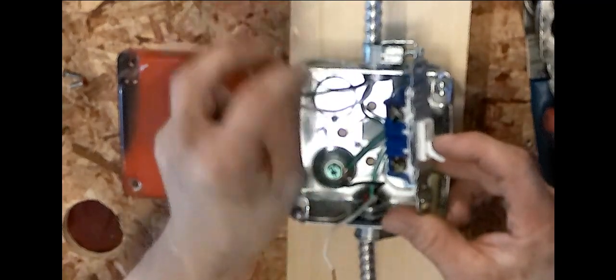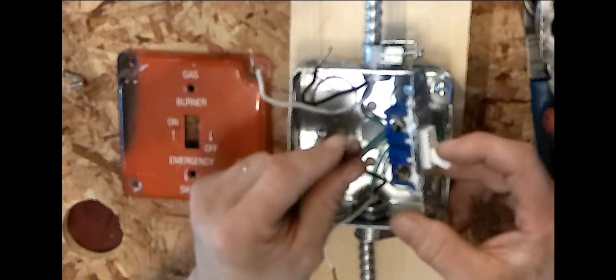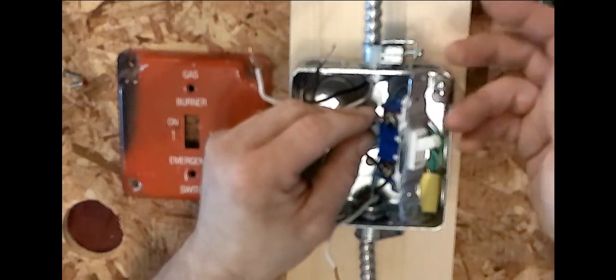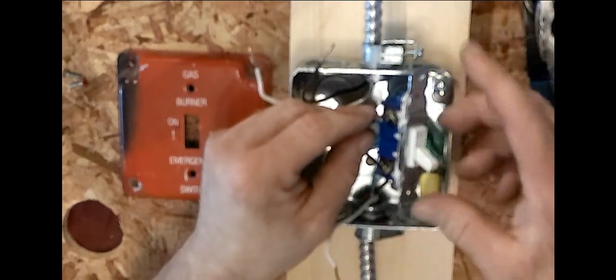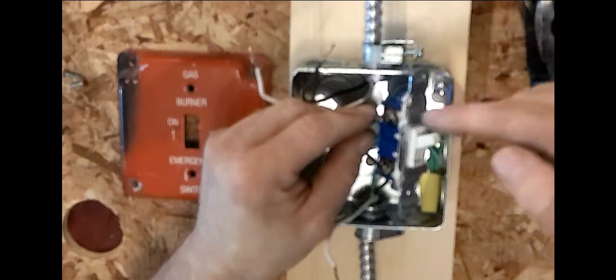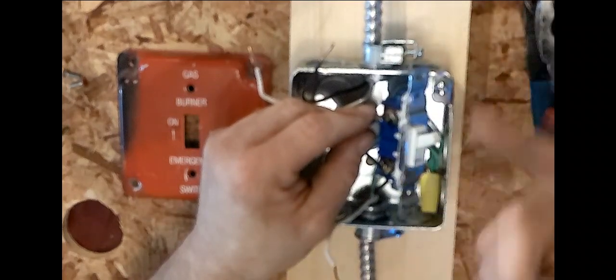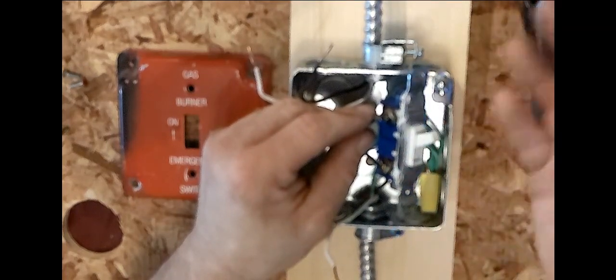And your load wire will go to the terminal in your on position so that when you turn the switch on, the power is going to this terminal and it's turning your appliance on, which in this case is our boiler.